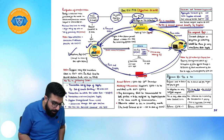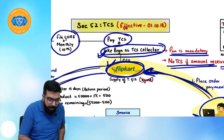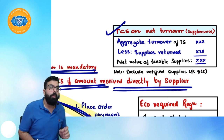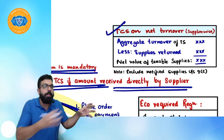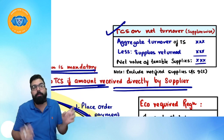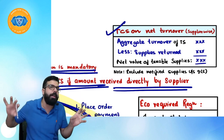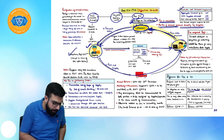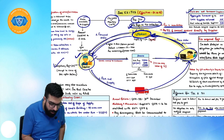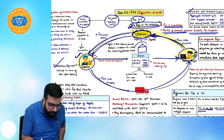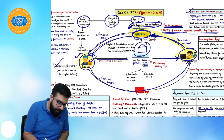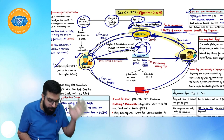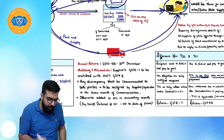The e-commerce operator deducts TCS on net turnover supplier-wise: whatever the supplier has supplied in the month minus returns. For example, if supplies are ₹10 lakh and returns are ₹2 lakh, TCS is deducted only on ₹8 lakh. If the supplier also keeps goods in the e-commerce operator's warehouse, the supplier must declare that location as an additional place of business.